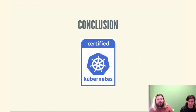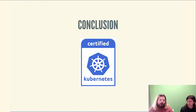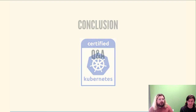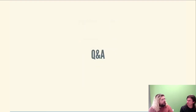Conformance ensures that every vendor's version of Kubernetes supports the required APIs, as do the open source community versions. There is a strong ecosystem around conformance supporting all levels of involvement with Kubernetes — from vendors to users to developers. Thanks for being a part of this presentation. Shall we go with the Q&A? I think we shall. See you there.